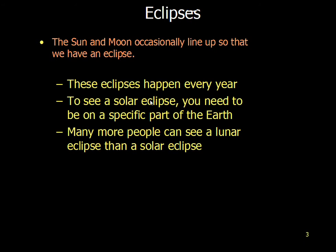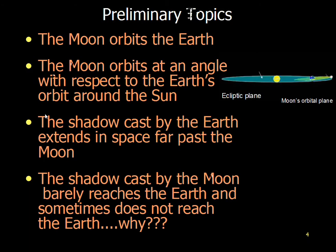Solar eclipses for a particular individual are more rare. The moon's shadow is smaller than the earth's and barely reaches the surface of the earth, so it's a small surface area where the Sun is obscured. For the lunar case, many many people can see the lunar eclipse — the earth's shadow is bigger. These don't happen every month. The moon goes around the earth roughly once a month, about 27 days, but there's not always a direct alignment.